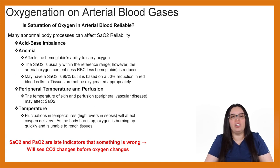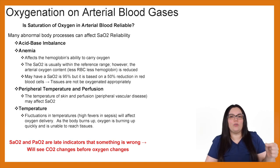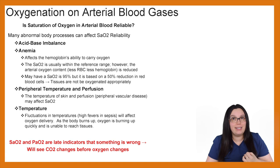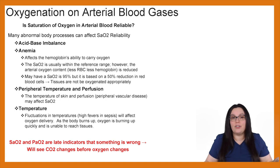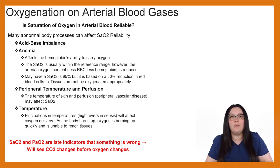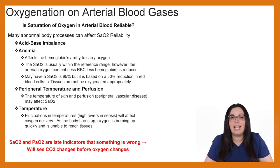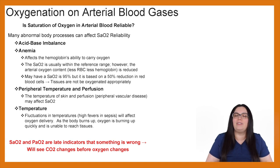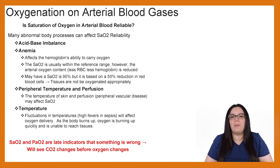Is saturation of oxygen in arterial blood reliable? Many abnormal body processes can affect SAO2 reliability. Acid-base imbalances — respiratory and metabolic acidosis and alkalosis — are one factor. Anemia is another huge one; it affects the hemoglobin's ability to carry oxygen. The SAO2 may be within the reference range, but the arterial oxygen content is reduced because there are fewer red blood cells and less hemoglobin. Someone may have an SAO2 of 95%, but if it's based on a 50% reduction of red blood cells, tissues are not being oxygenated appropriately.